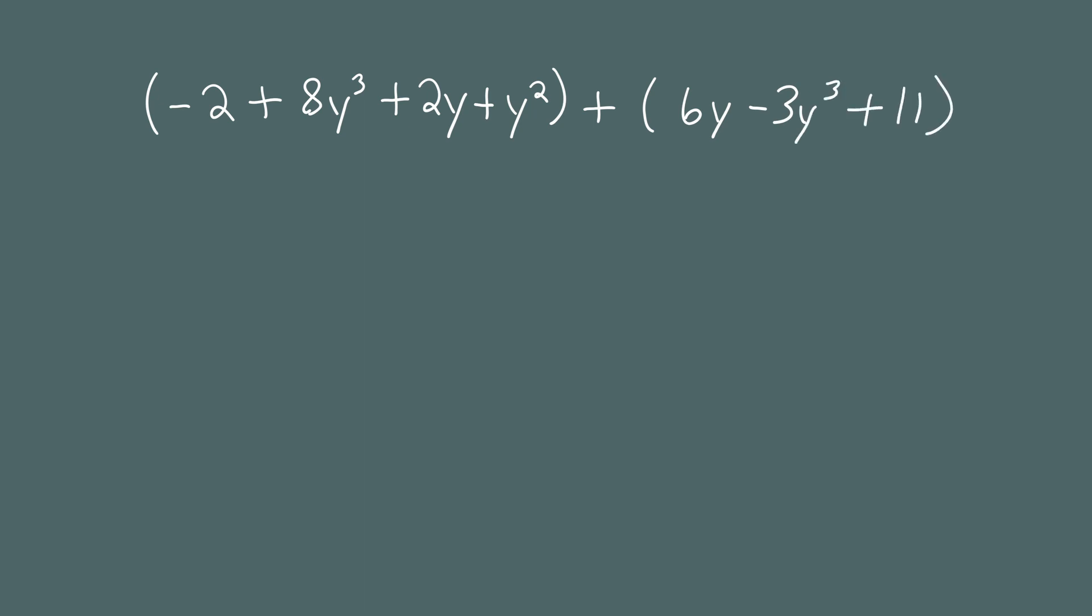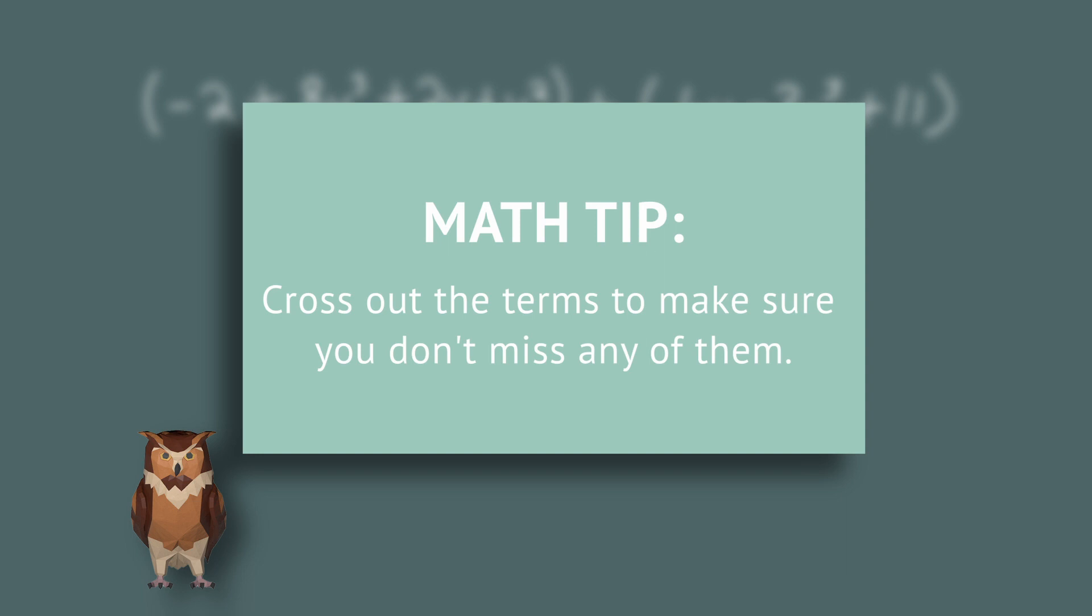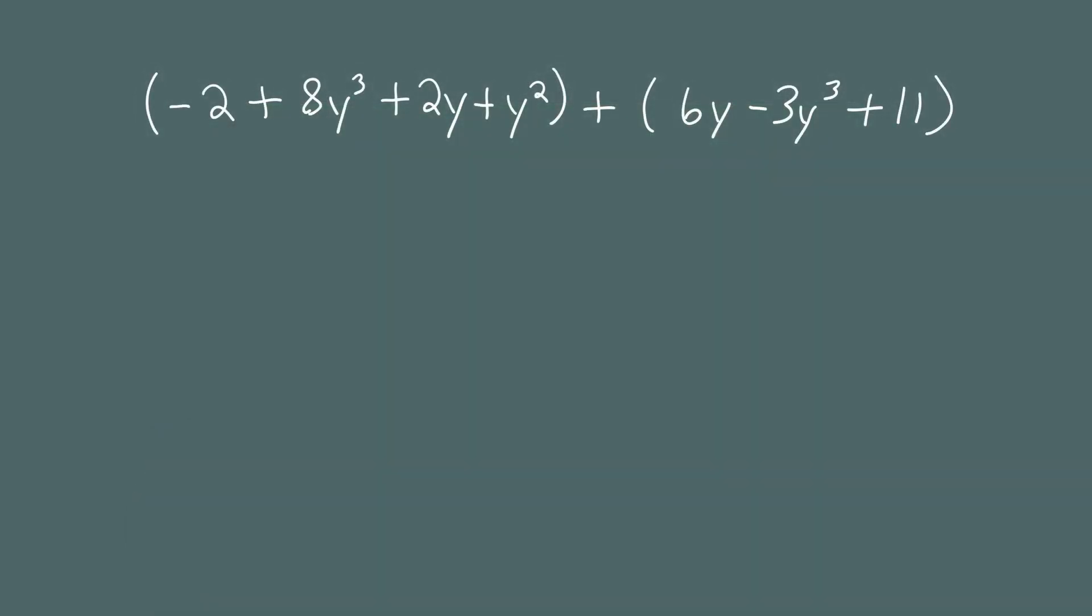We'll add these by grouping like terms. To make sure we don't miss anything, we'll cross out the terms as we group them. We'll group the terms from the largest exponents down to the smallest. 8y cubed and negative 3y cubed are like terms, so let's group them and cross them out. 2y squared doesn't have a like term in the second polynomial, so we just write it down on its own and cross it out. 2y and 6y are like terms, so we group those and cross them out. And finally, we group the numbers negative 2 and 11 and cross them out. There are no terms left over, so all that remains is to combine the like terms.